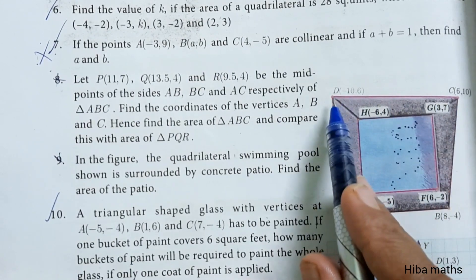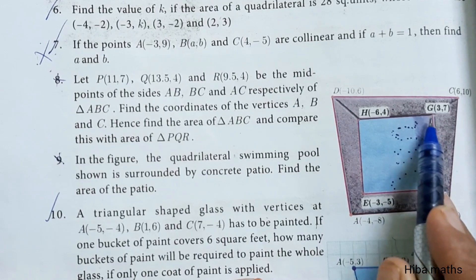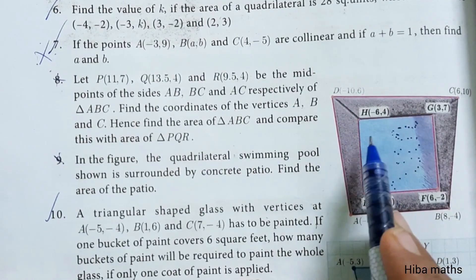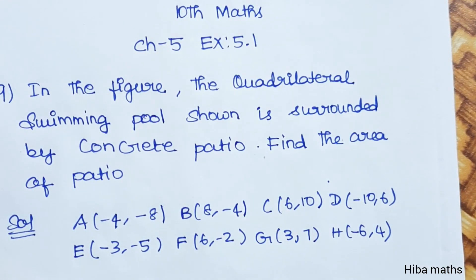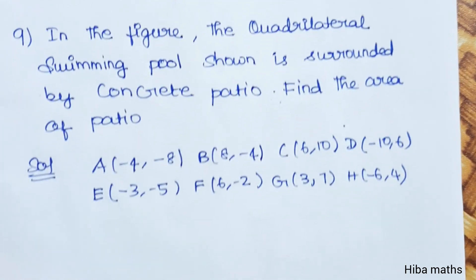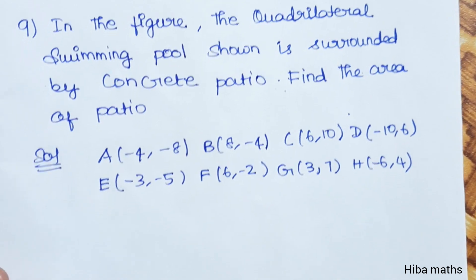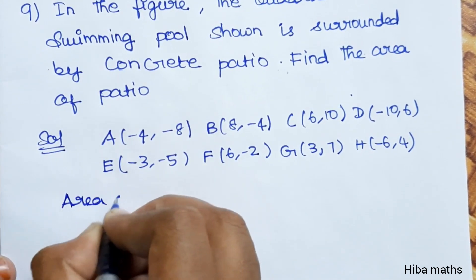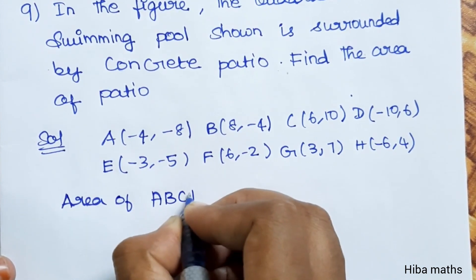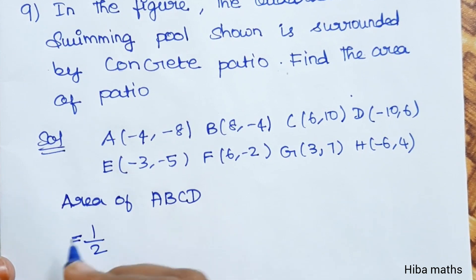The area of the path equals the outer quadrilateral area minus the inner quadrilateral area. We can use two area values. First, area of quadrilateral ABCD. The area formula is 1/2 times the shoelace expansion.